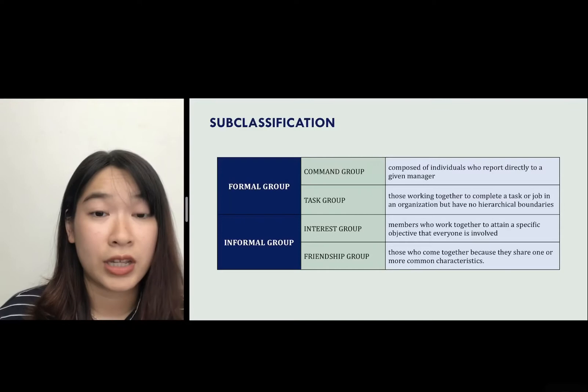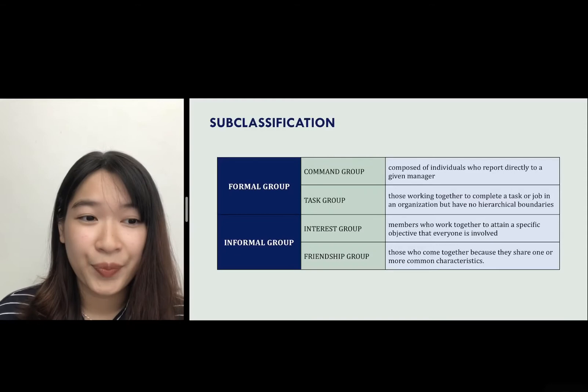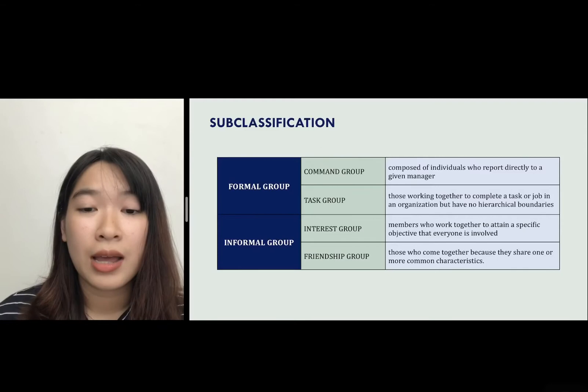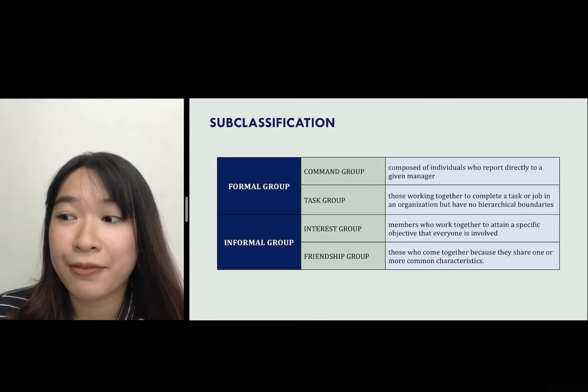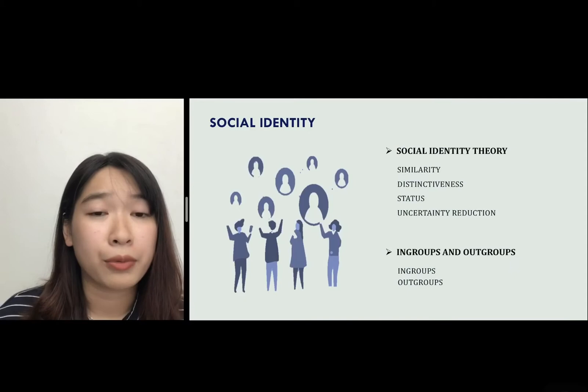Another kind of informal group is the friendship group. This kind of group includes people who come together because they share one or more common characteristics — maybe a group of friends. So we have looked at the definition of a group. What about why people join groups? The social identity theory will answer this question.